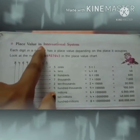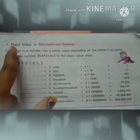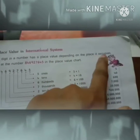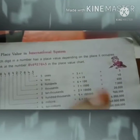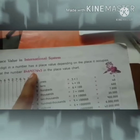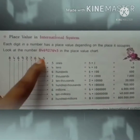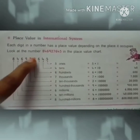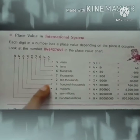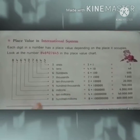Place value in the international system. Each digit in a number has a place value depending on the place it occupies. For the number 846,927,645: 5 is in the ones place, 4 is in the tens place, 6 is in the hundreds place, 7 is in the thousands place, 2 is in the ten thousands place, 9 is in the hundred thousands place, 6 is in the millions place, 4 is in the ten millions place, 8 is in the hundred millions place.